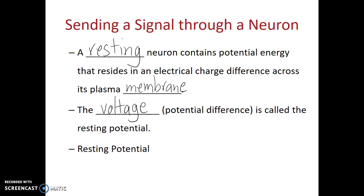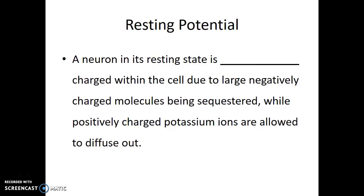So what is a resting potential and why is it there? It's that charge difference, and here's the reason for it. A neuron in its resting state is negatively charged internally due to large negatively charged molecules being sequestered within the cell, while positively charged potassium ions are allowed to diffuse out. Neurons have active sodium-potassium pumps — molecular pumps that move sodium outside the cell while pumping potassium in. The potassium pumped in is then allowed to diffuse back out, and this is what leads to that negative resting potential.